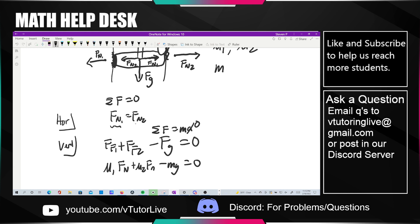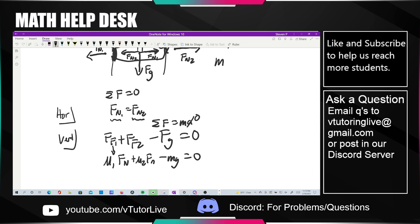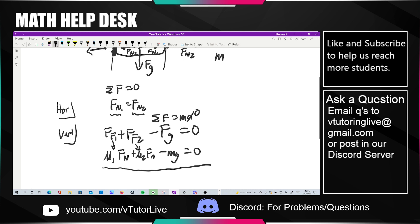From the first part we know that the two force normals are equal to each other. So rewriting the force frictions as mu1 times force normal and mu2 times force normal gives us the equation, the crucial equation. And at this point all you need to do is solve for Fn.